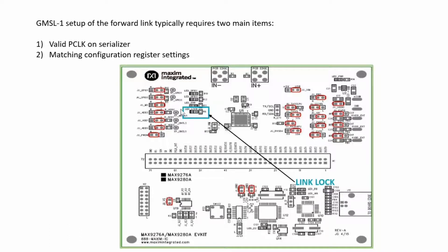If you are getting a valid pixel clock, then you should see a link clock LED on the Deserializer side. A link clock tells you that the PLL is locked and the pixel clock is recovered with correct byte alignment.